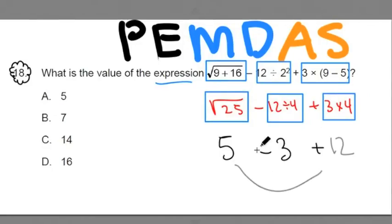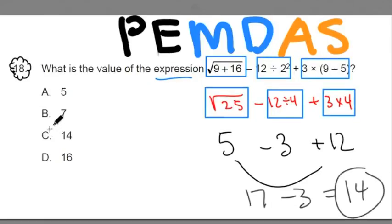We add these values up. 5 plus 12 is 17, minus 3 gets you 14. The answer here is C.